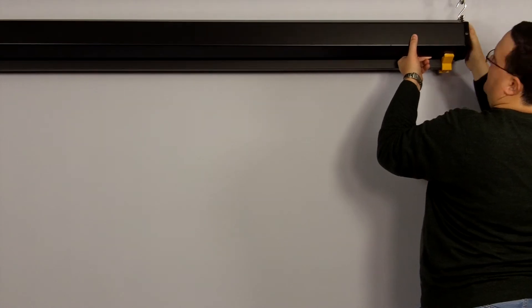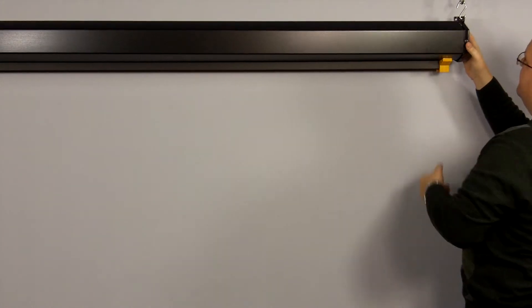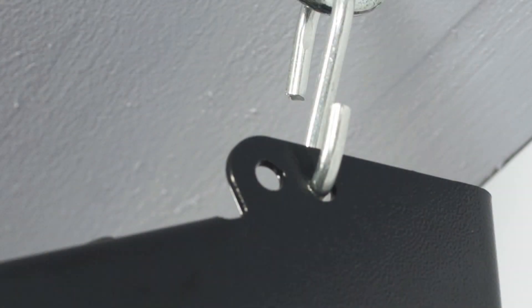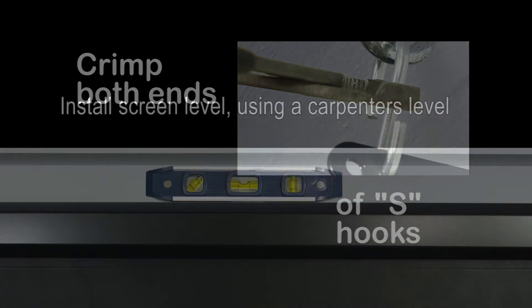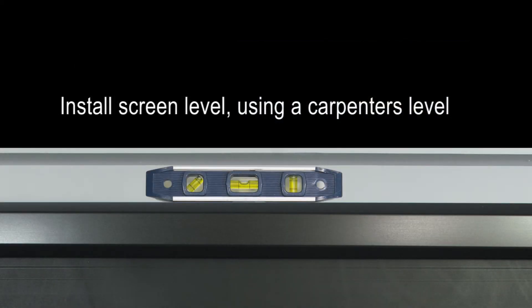Suspend screens from holes and end caps. S-hooks, chains or cable, and turnbuckles should be provided by the installer. S-hooks should go through the rear holes on the end cap sides. For added safety, be sure to crimp both ends of the S-hooks so the screen cannot come off. Screen should be installed level using a carpenter's level.